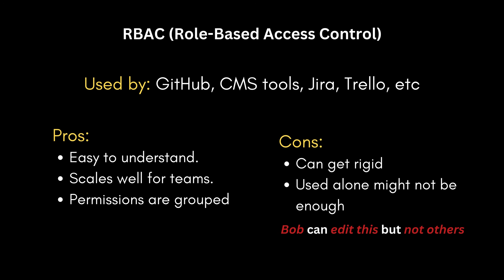You see RBAC everywhere: GitHub, CMS tools, project management platforms like Jira or Trello, and company dashboards. Some pros: it's easy to understand, scales well for teams, and grouped permissions are easier to manage than per-user rules. The cons: it can get rigid if you need fine-grained rules — for example, 'Bob can only edit this project but not others' — in which case role-based access control alone might not be enough.